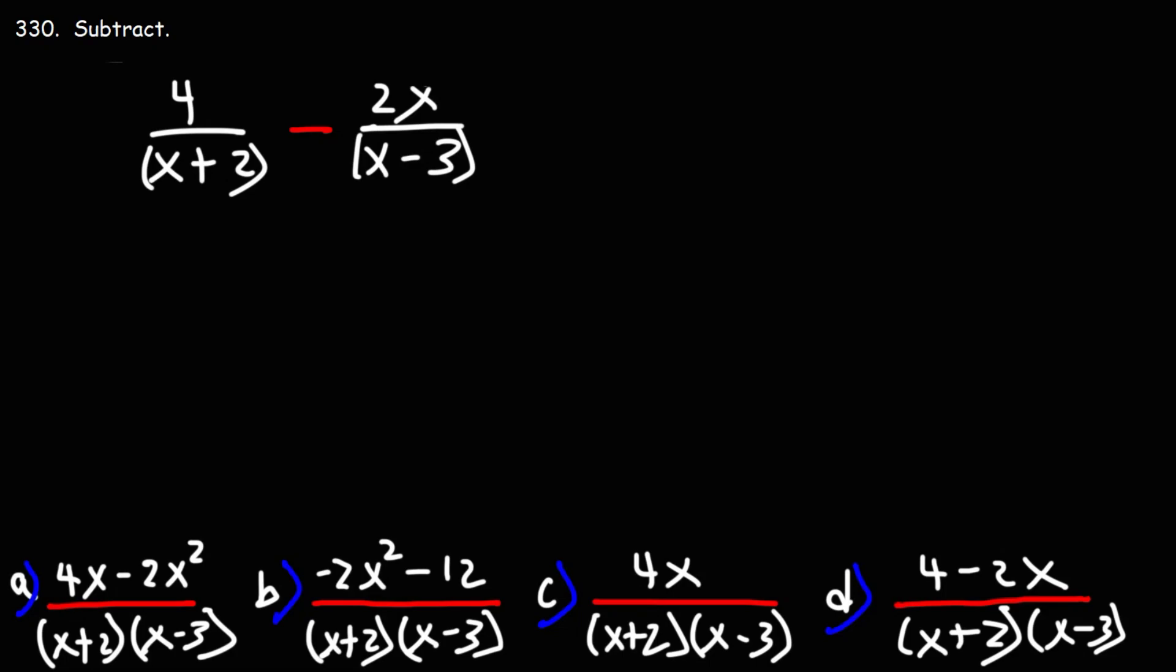Number 330, subtract. We're subtracting two rational expressions: 4 over x plus 2 minus 2x over x minus 3.